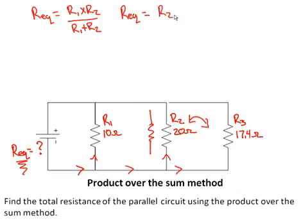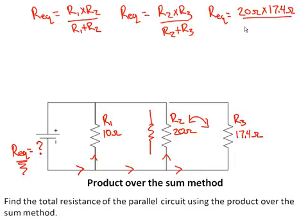So R2 times R3 divided by R2 plus R3. So R equivalent equals 20 ohms times 17.4 ohms divided by 20 ohms plus 17.4 ohms.